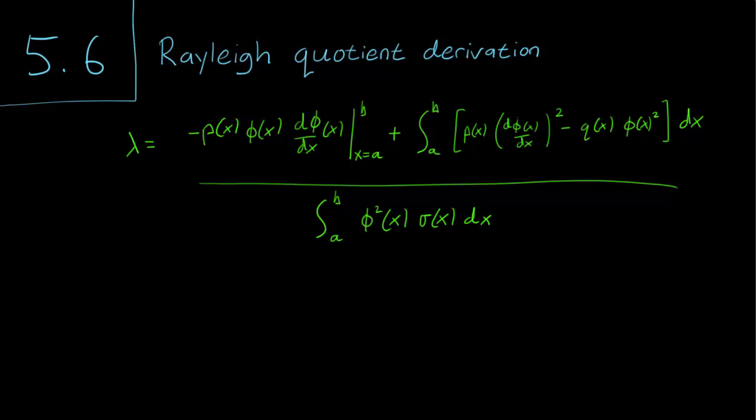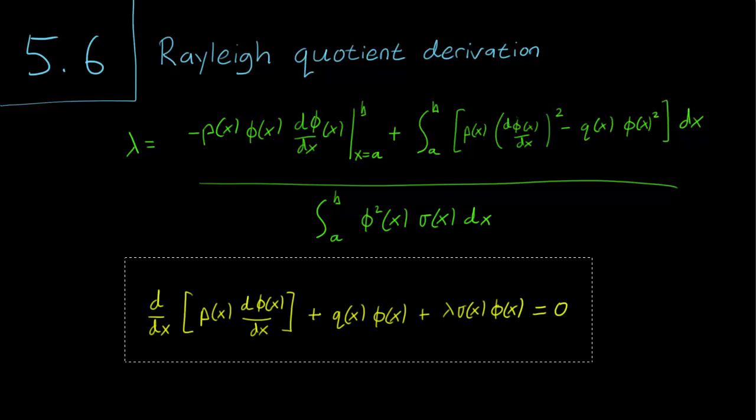Naturally, we start with the Sturm-Liouville equation. The phi here refers to the eigenfunctions and lambda to the corresponding eigenvalue. p and q are real continuous functions, and sigma(x) is also a real continuous function, but one that's positive.